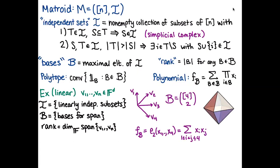As a canonical example: given n vectors in a vector space over any field, we get a matroid by taking independent sets to be collections of indices for which the vectors are linearly independent, and bases to be the maximally linearly independent subsets — the indices where the vectors form a basis for their span. The rank is just the dimension of that span.